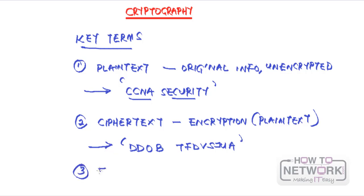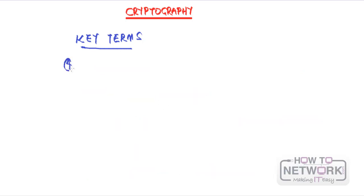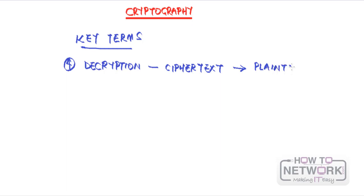The third term is encryption, which just means converting from plain text to ciphertext. It's the process by which you hide information — when somebody reads the ciphertext they don't understand what it's saying, but everybody understands what 'CCNA security' means. The fourth term is decryption, which is just the opposite of encryption — converting from ciphertext back to plain text. Encryption is like encoding information, and decryption is decoding it.